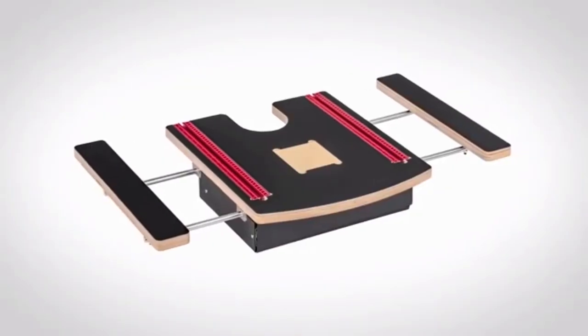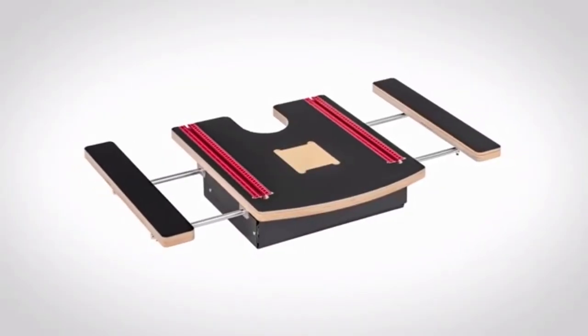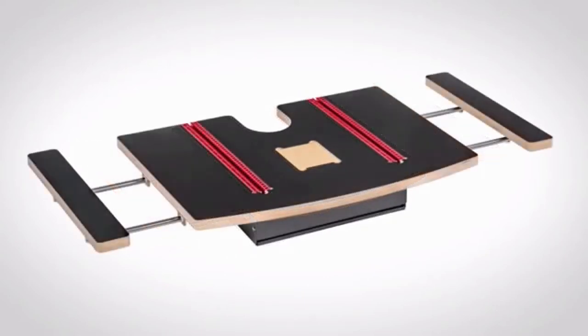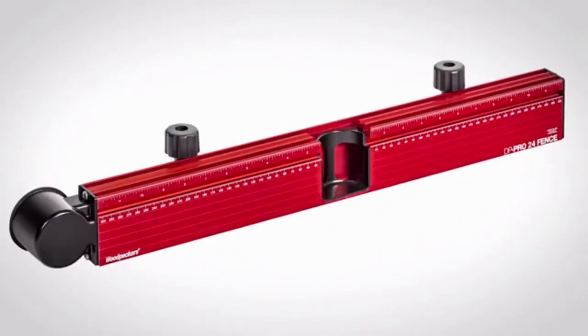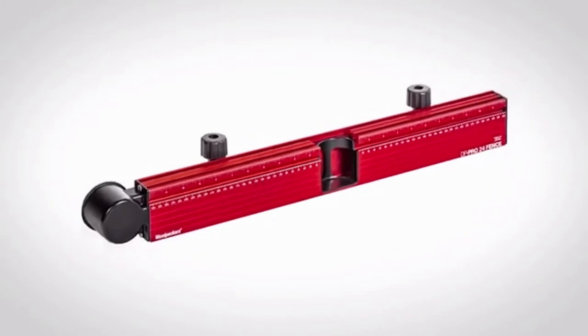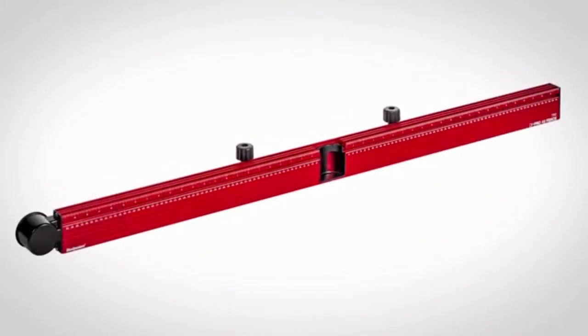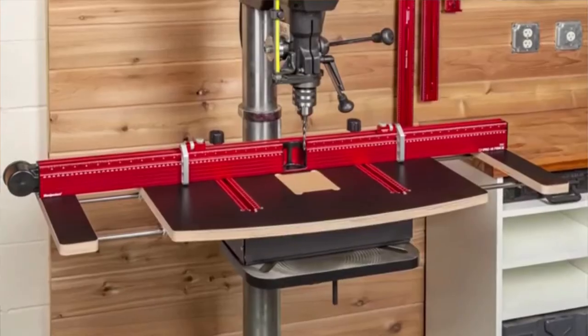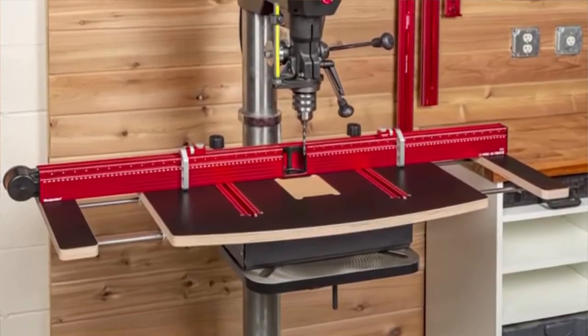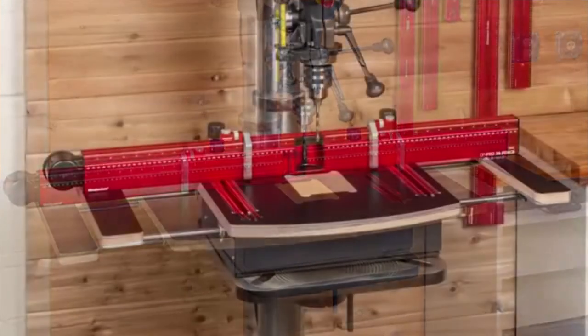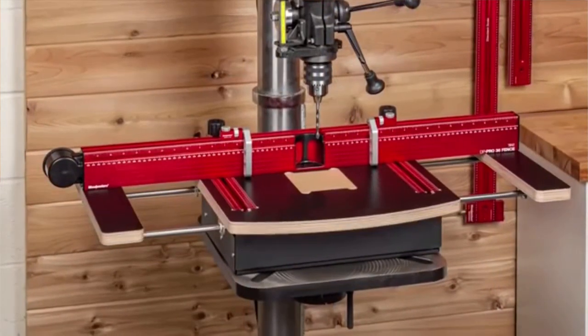We make the DP Pro table in two sizes, 36 inch and 48 inch. We make the DP Pro fence in three sizes, 24, 36, or 48 inches. You'll find several different bundles on our website with various combinations of tables and fences.